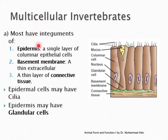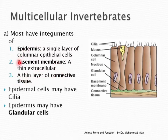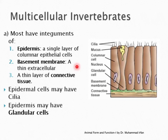In multicellular invertebrates, the integument is made up of three layers: epidermis, a basement membrane, and a thin layer of connective tissue. Epidermis is a single layer of columnar epithelial cells. In animals there are four types of tissues: epithelial tissue, connective tissue, muscular tissue, and nervous tissue. Epithelial tissue makes all the coverings of the body, whether exposed to internal or external environment, and also provides glandular cells, making unicellular or multicellular glands.